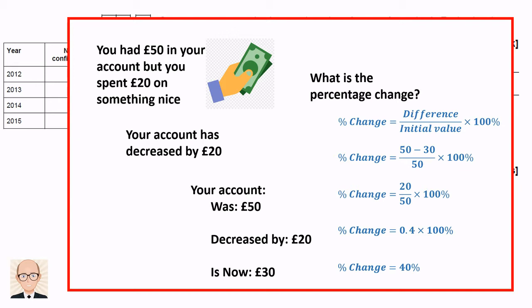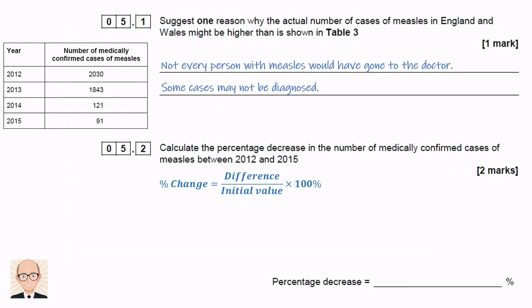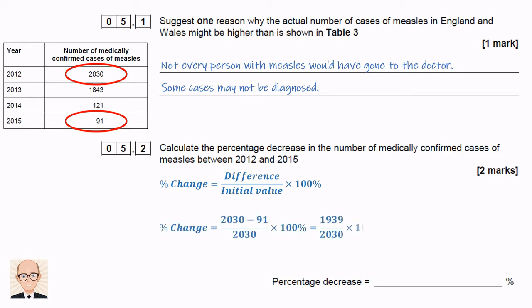Your account has decreased by 40%. Use exactly the same procedure for percentage increases — the only difference is the final value will be higher than the original value. Back to the question: the number of measles cases decreased from 2,030 to just 91 over this time, a difference of 1,939. 1,939 divided by 2,030 is 0.955, which multiplied by 100% and rounded gives 96%.